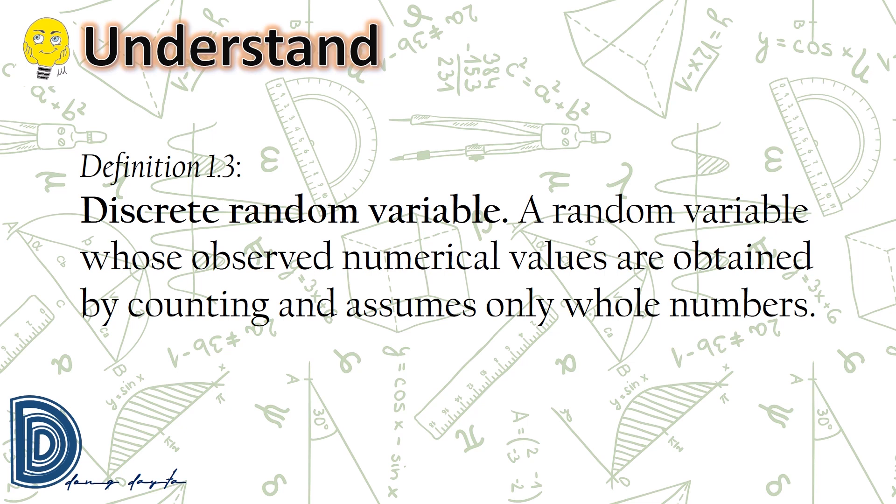Let us differentiate between the two. A discrete random variable are variables whose observed numerical values are obtained by counting and assume only whole numbers.